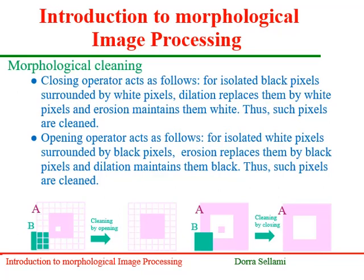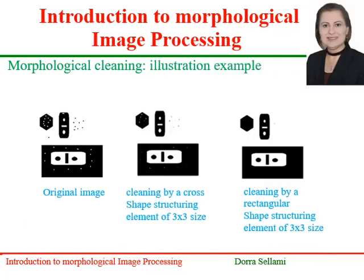Let's have a closer look at closing and opening operators. The closing operator acts as follows: for isolated black pixels surrounded by white pixels, dilation replaces them by white pixels, and erosion maintains them white — thus such pixels are cleaned. The opening operator acts as follows: for isolated white pixels surrounded by black ones, erosion replaces them by black pixels, and dilation maintains them black. This is why we say that such operators ensure morphological cleaning. By morphological cleaning, borders are not affected. Here is an illustration of the cleaning effects of morphological operators acting on isolated black pixels in brighter regions and isolated white pixels in darker regions.